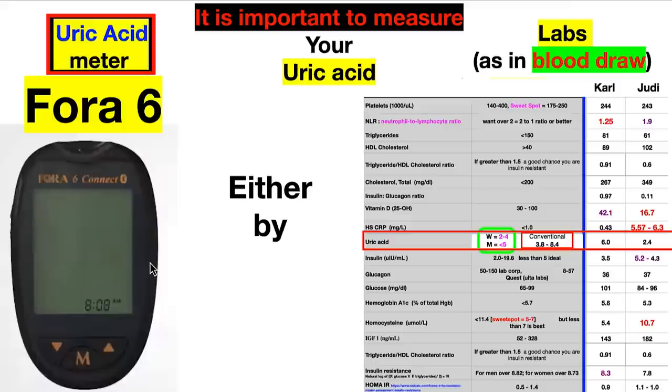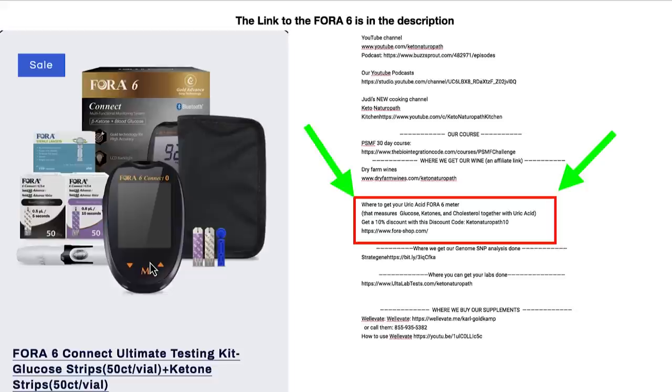There's a link in every video to get tested through Ulta Labs — we get nothing out of it. Or you can get a meter. We use one that functions as a glucometer, ketone meter, uric acid meter, and cholesterol meter in one device. A lot of people who don't get gout still have high uric acid — what they call asymptomatic versus symptomatic hyperuricemia. It's something you need to do to take care of yourself. This is actionable information.